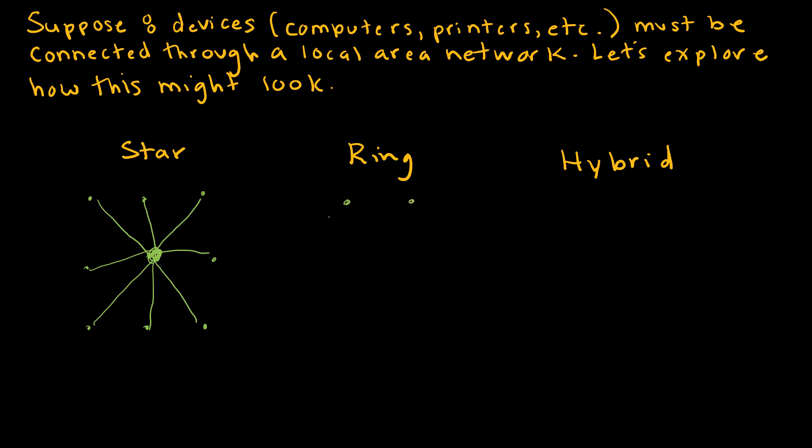We can also set up a ring, and a ring is really just a cycle. And a cycle is just fine, but the problem with this is, let's say this guy is a processor. Well, then for this guy down here, it would take a lot longer to get down here, as opposed to the star model where each is directly connected.